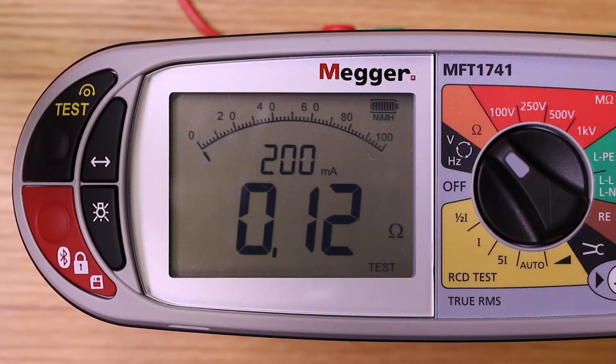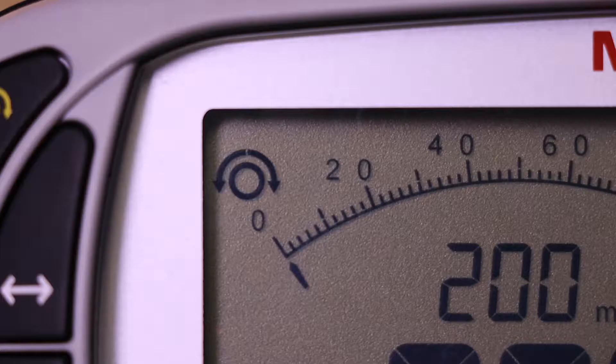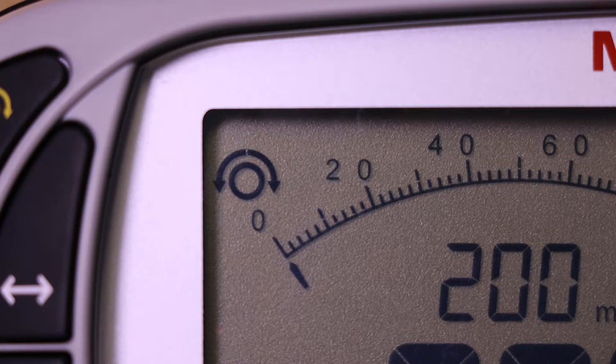Pressing the test button will now memorize the measured resistance of the test leads and you'll get a zero reading on the display, as well as an indication on the screen to confirm that the null is in place.